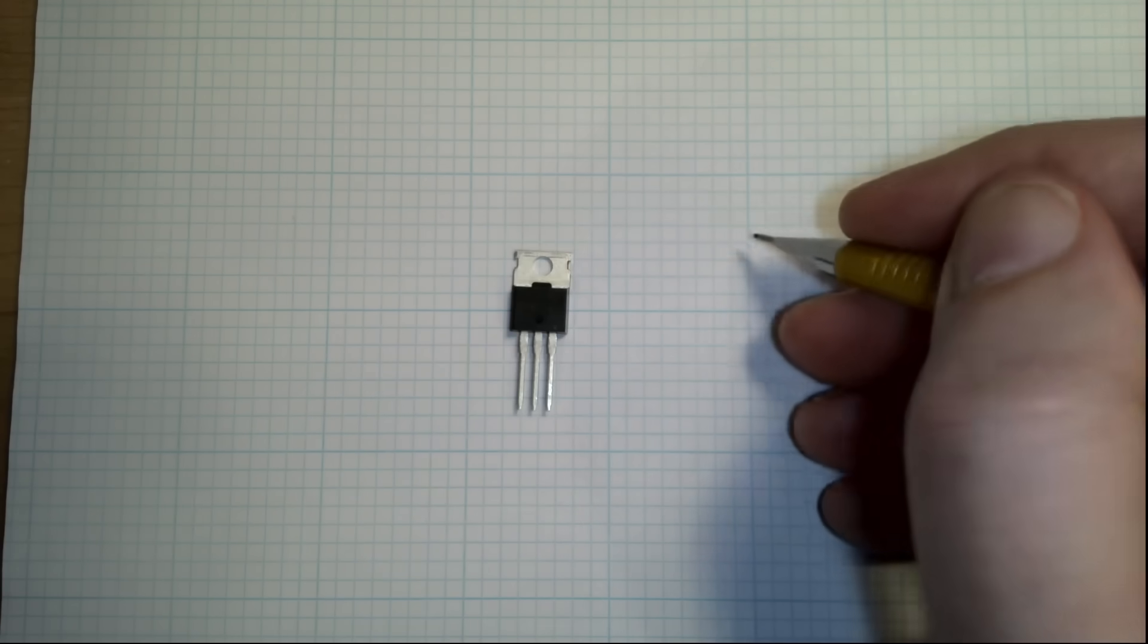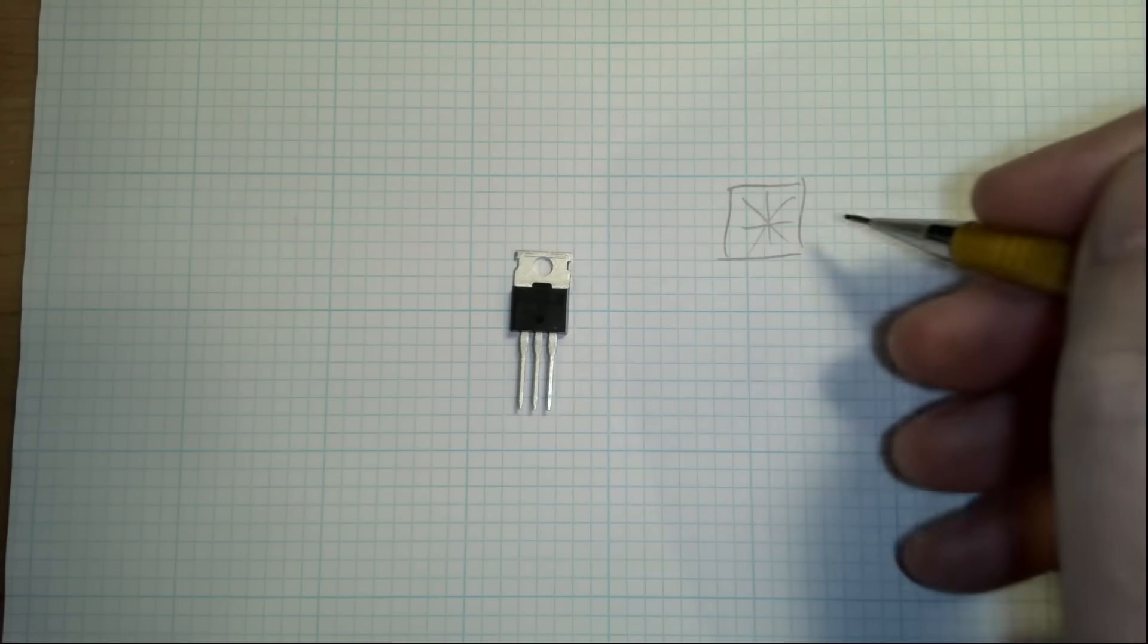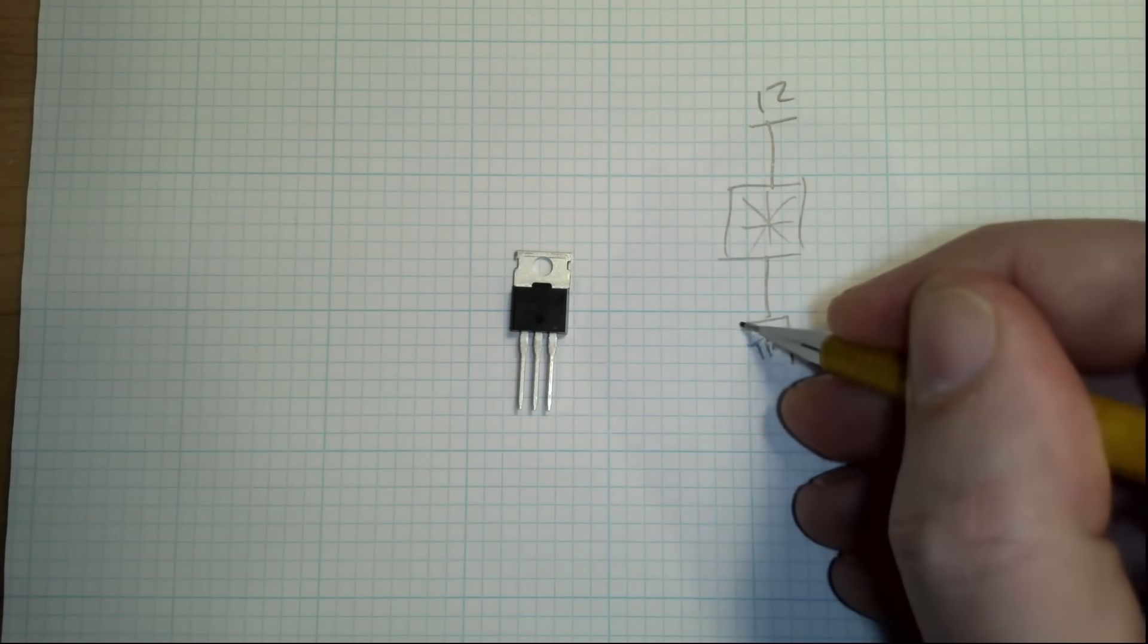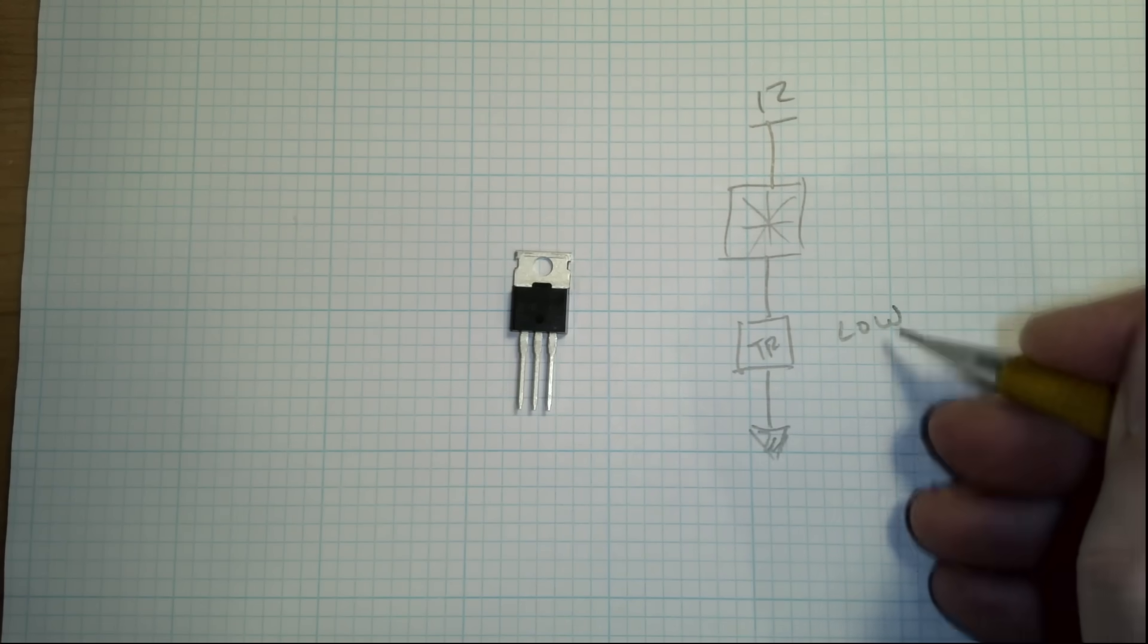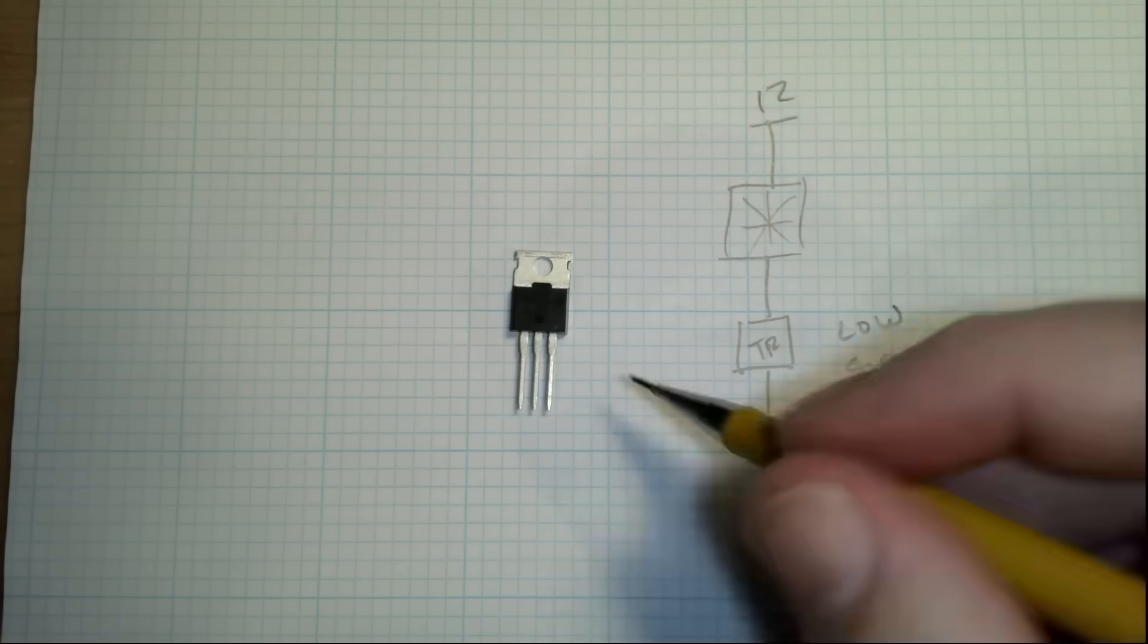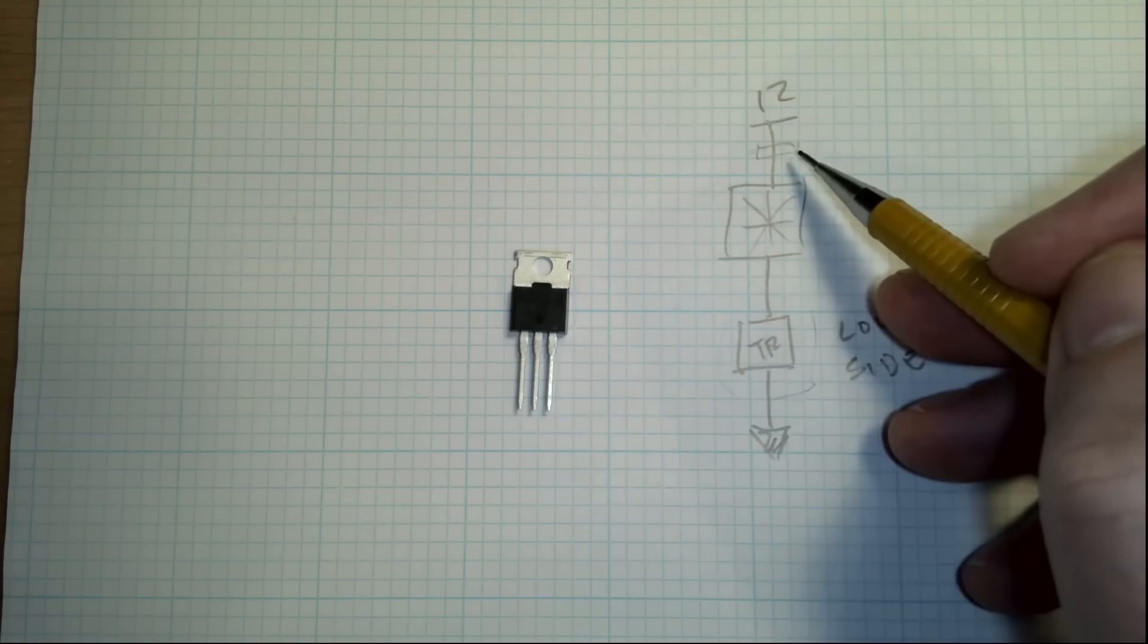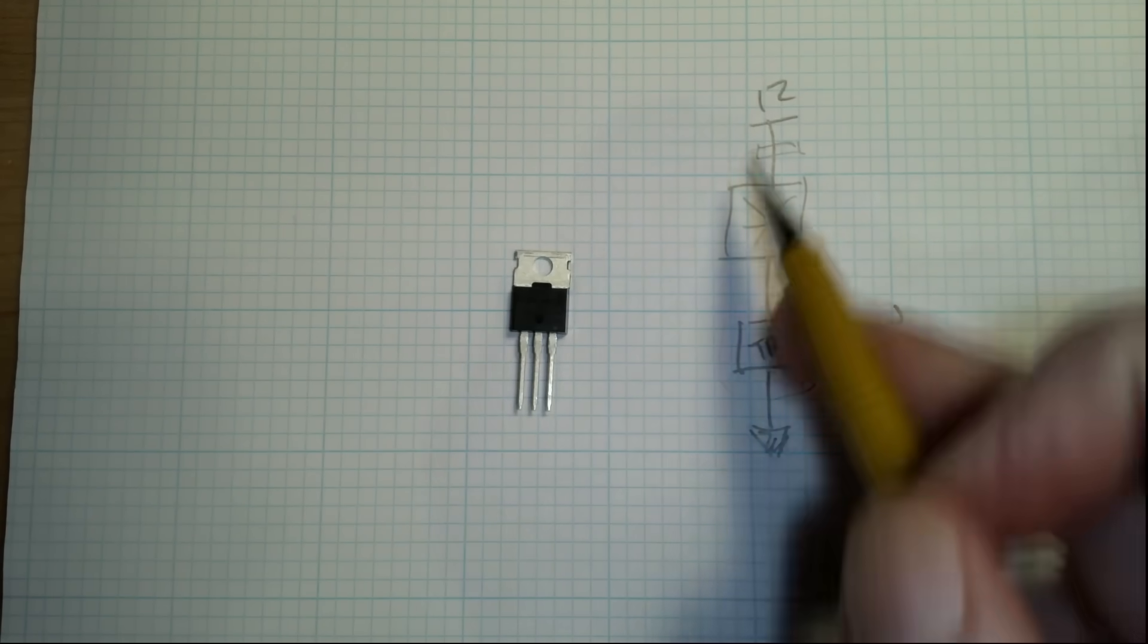So basically, if we have a fan, we're using our fan here and we want to control it. We would have to give 12 volts here and then our transistor is here to ground. This is called low side switching. And an N-channel will work for this. If you wanted to switch up here, you can't use an N-channel. You'd have to use a P-channel. And again, we'll cover that in a different video, but this is what we're working on here.